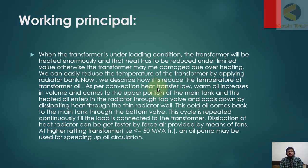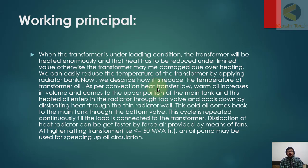Now we describe how it reduces the temperature of transformer oil. As per the convection heat transfer law, warm oil increases in volume and rises to the upper portion of the main tank. This heated oil enters the radiators through the top valve and cools down by dissipating heat through the thin radiator wall. The cold oil then comes back to the main tank through the bottom valve.